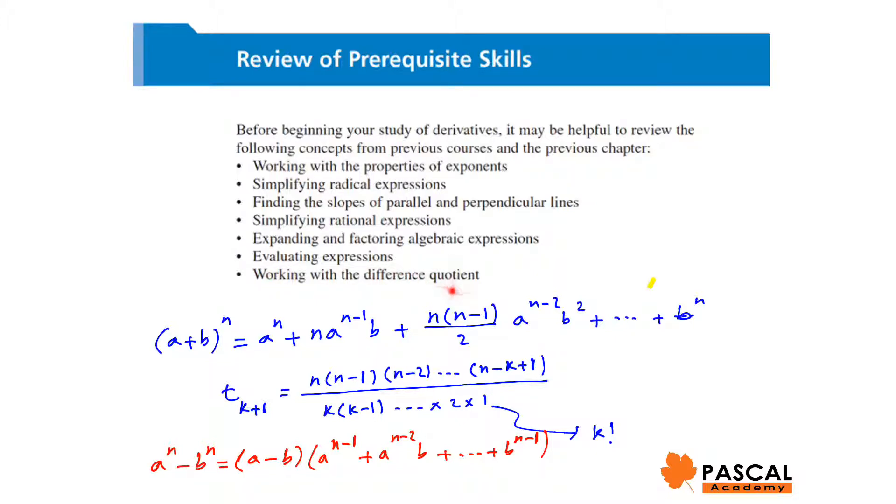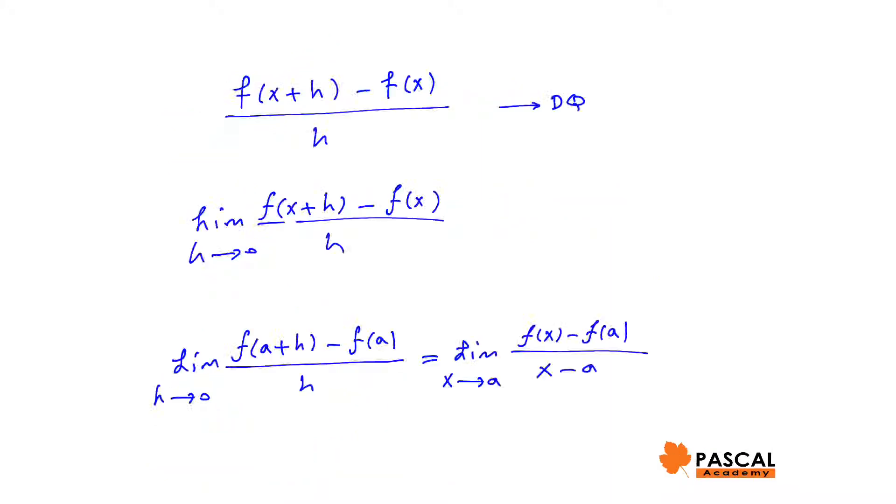Working with the difference quotient, f of x plus h minus f of x over h as h approaches 0, is very important. And as we see in this chapter, it is called derivative of f of x, and it is denoted by f prime of x.